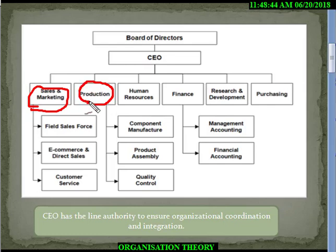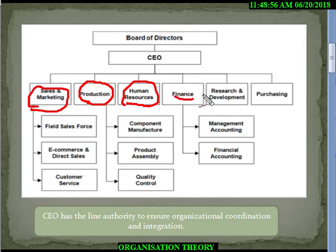A limited span of specialist results in a tall organizational structure. When there is more specialization, specialists are skilled and focused on expertise, so the span of control — the number of employees that can work under them — gets limited.